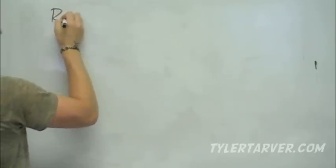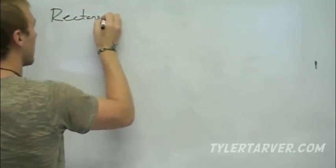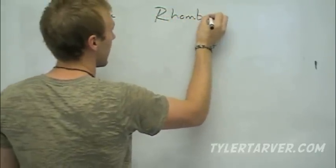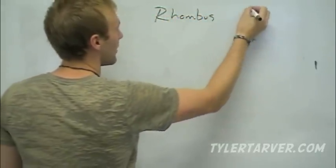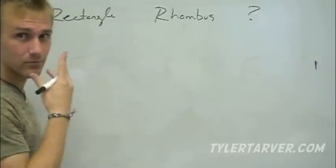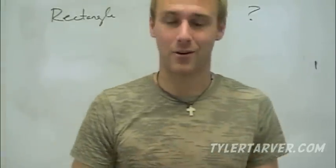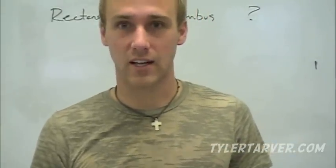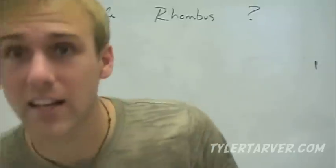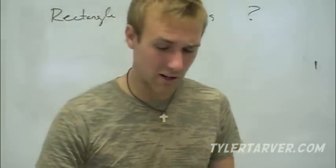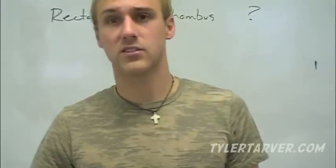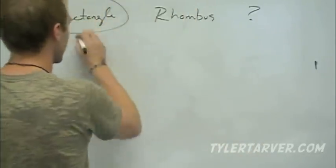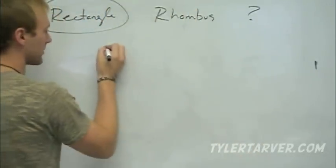We've got a rectangle, we've got a rhombus, and then we've got a mystery. We're going to have a mystery shape I'm going to tell you at the end. First thing we're going to talk about is a rectangle.